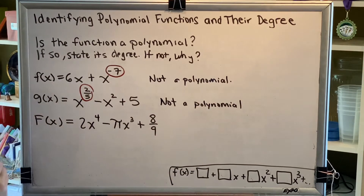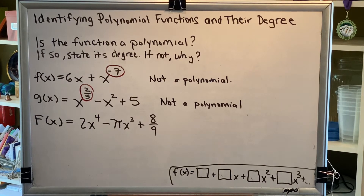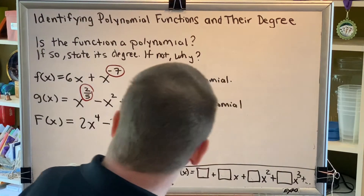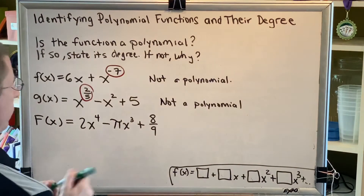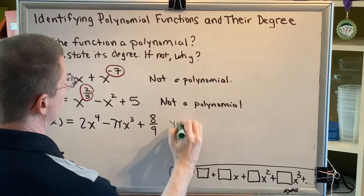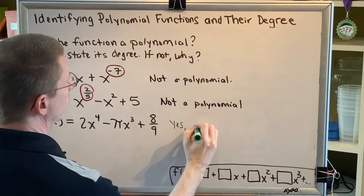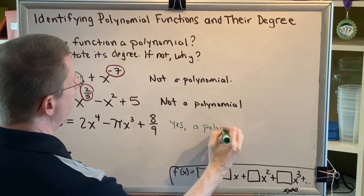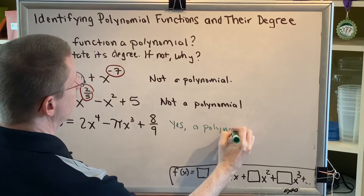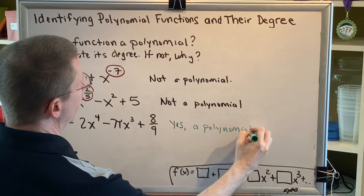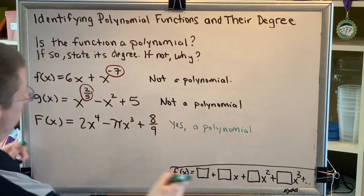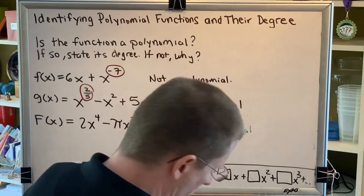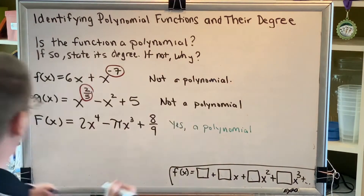And that brings us to our last one, capital F of x. Capital F of x is a polynomial — yes, a polynomial — and the reason why is because we can write it in a form that matches this statement. Here's how we would do that.